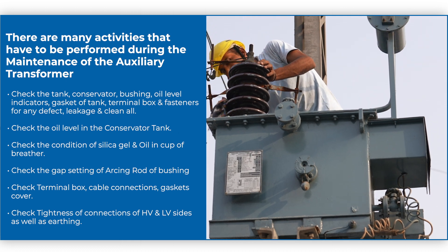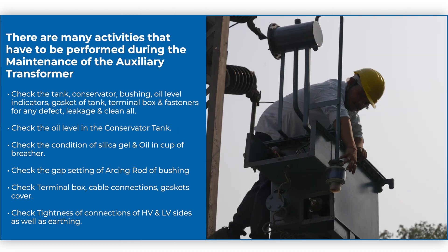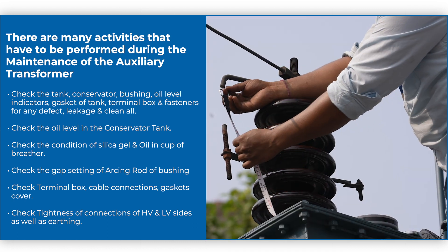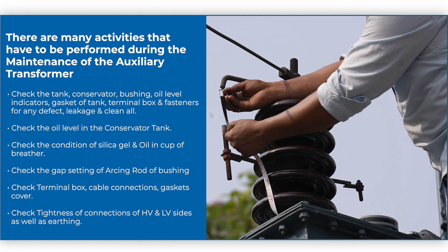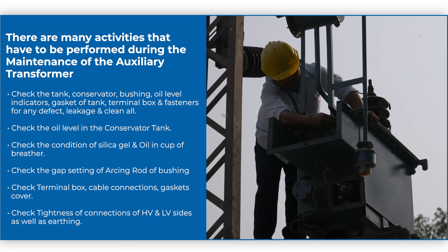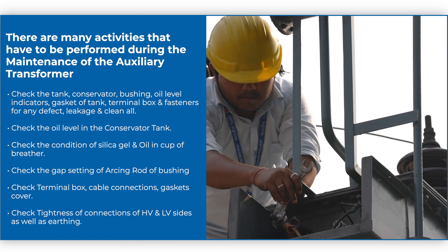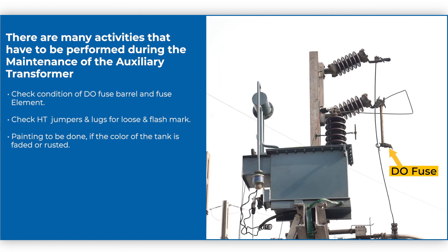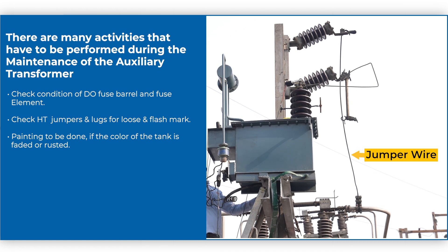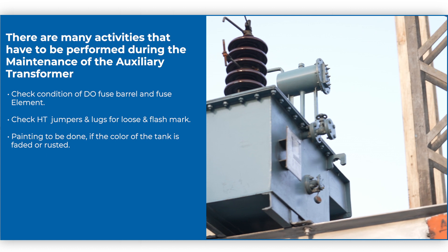Check the oil level in the conservator tank. Check the condition of silica gel and oil in cup of breather. Check the gap setting of arcing rod of bushing. Check terminal box, cable connections, and gasket cover. Check tightness of connections of HV and LV sides as well as earthing. Check condition of DO fuse barrel and fuse element. Check HT jumpers and lugs for loose connections and flash marks. Painting to be done if the color of the tank is faded or rusted.